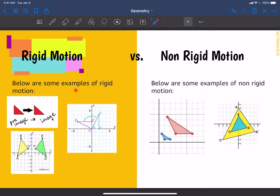So these are our rigid motions. And over on this side, we have our non-rigid motions. Notice here how the pre-image with these two triangles, the pre-image is smaller than the image. Same thing here. The pre-image is smaller than the image.